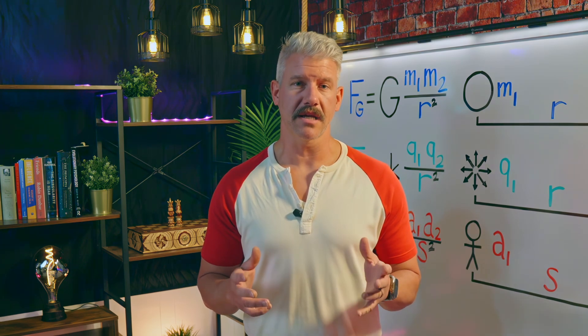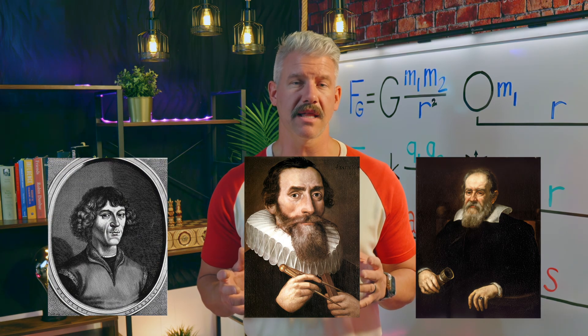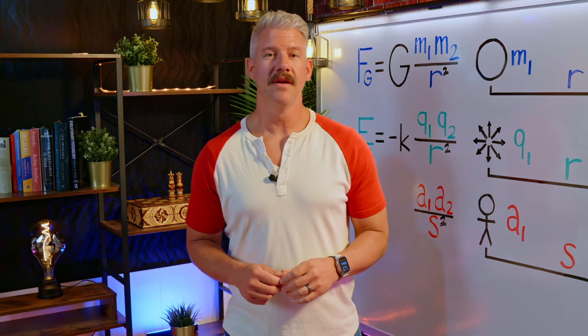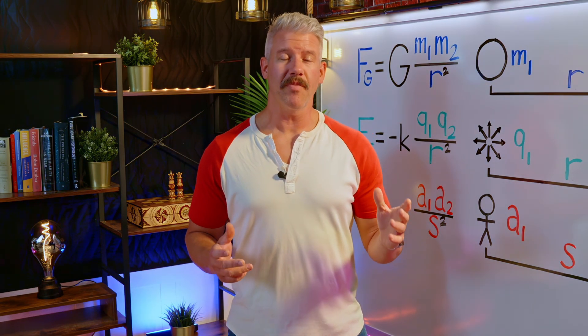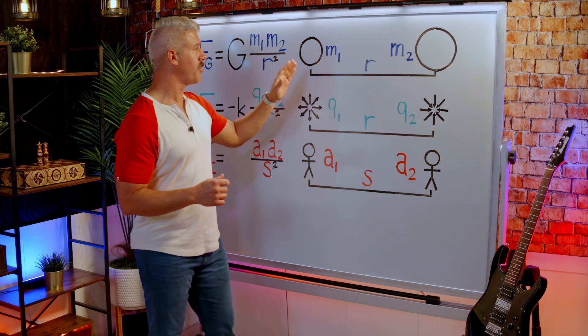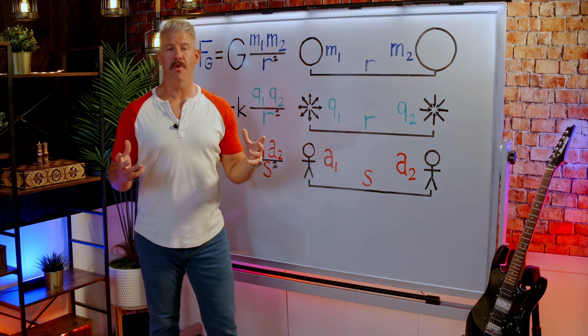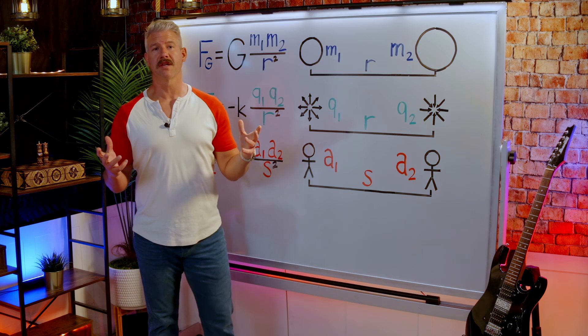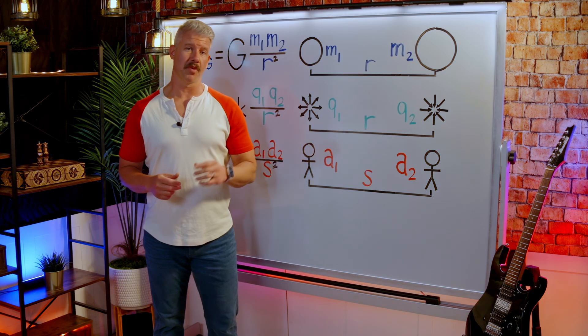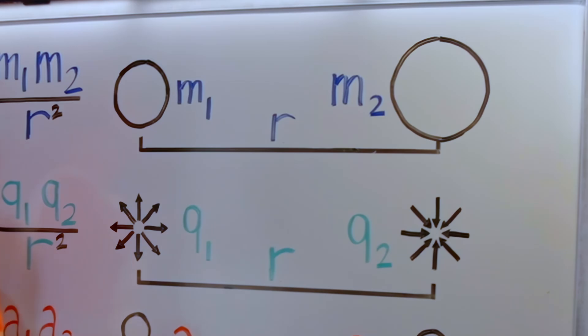This work built upon earlier contributions from notable figures such as Nicholas Copernicus, Johannes Kepler, Galileo Galilei, and others. Newton proposed that every particle of matter in the universe is attracted to every other particle of matter with a force that is directly proportional to the product of their masses and inversely proportional to the square of the distance between their centers.